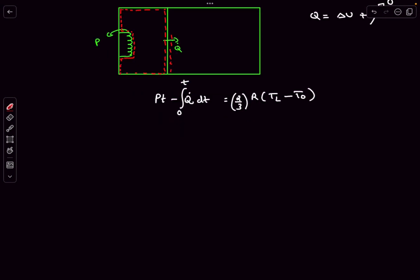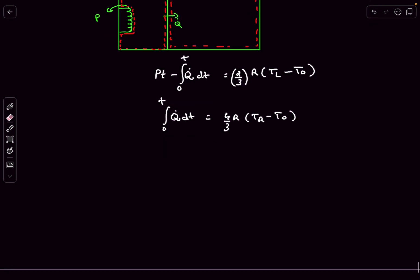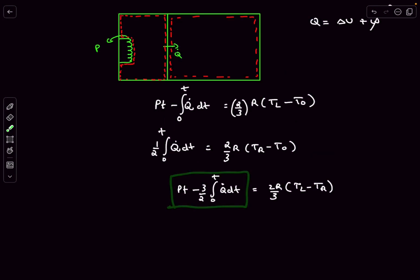Applying the first law to the right chamber: the only heat transfer in is the integral of Q̇ dt from 0 to t, and this equals the change in internal energy: (4/3)R(TR − T₀). Subtracting the two equations cancels the T₀ terms, giving: P·t − (3/2)∫Q̇ dt = (2R/3)·ΔT.